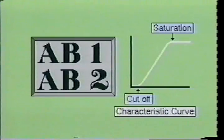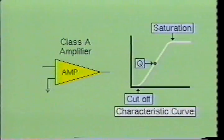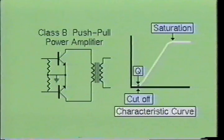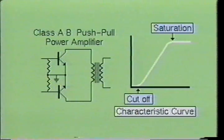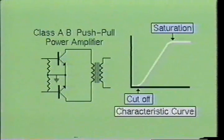Another class of amplifier operation is class AB1 and class AB2. The class A amplifier was biased at the center of the linear portion of the characteristic curve, resulting in lower distortion. The class B amplifier was biased at the cutoff point, which resulted in a more efficient circuit but also some distortion. It is possible to bias two transistors in a push-pull configuration somewhere between the class A and class B bias points. These are called AB amplifiers. The class AB amplifier is less efficient than class B and more efficient than class A, with less distortion than class B and more distortion than class A.